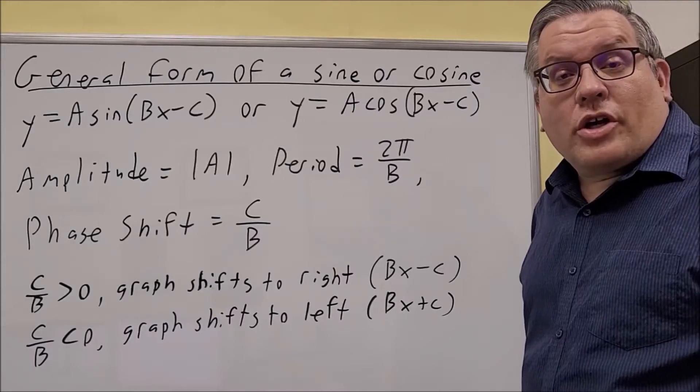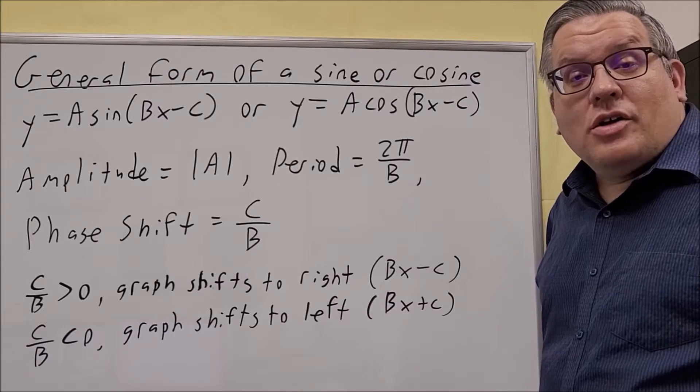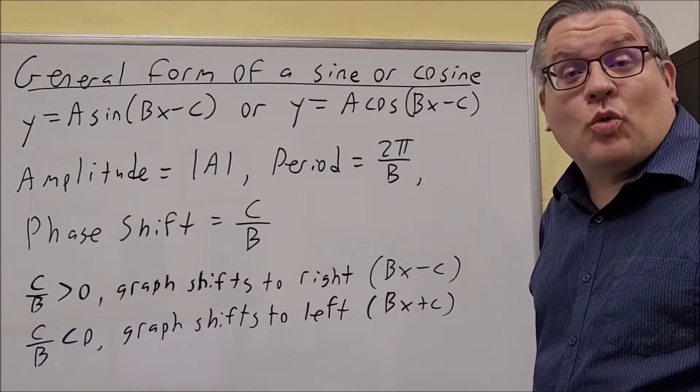Okay, so if you look at the base graphs for sine and cosine, you'll notice that there's a 1 in front of the trig function and there's also a 1 in front of the x.